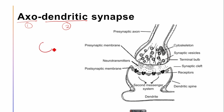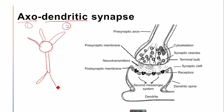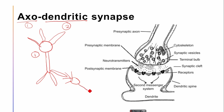Here you can see this is a soma — a cell body — and from the cell body the dendrites are arising. From the soma, the axon is also arising, and the axon has axon terminals. This is one neuron, and the axon of this one neuron is connected with the dendrites of another neuron. That other neuron has a dendrite, cell body, then the axon, then the axon terminals. This picture shows this junction — this is the axodendritic synapse.